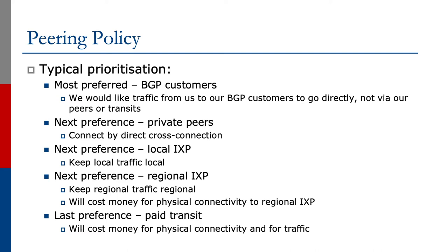The typical prioritization would be something like this. The most preferred would be BGP customers, because we would like traffic from us and from the internet to go to our BGP customers directly, not via our peers or our transits. The next preference would be our private peers. We want traffic to go to our private peers over the direct cross-connect, not over the local exchange point, regional exchange point, or paid transit, because a private peer connection is usually a direct fiber cross-connect that both we and our private peer can control directly.